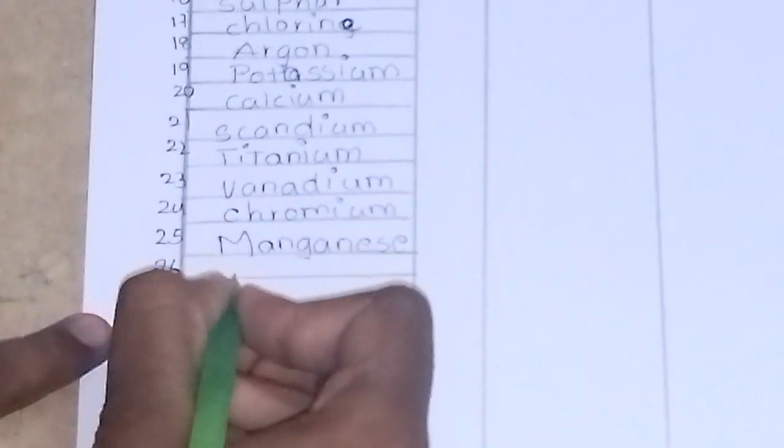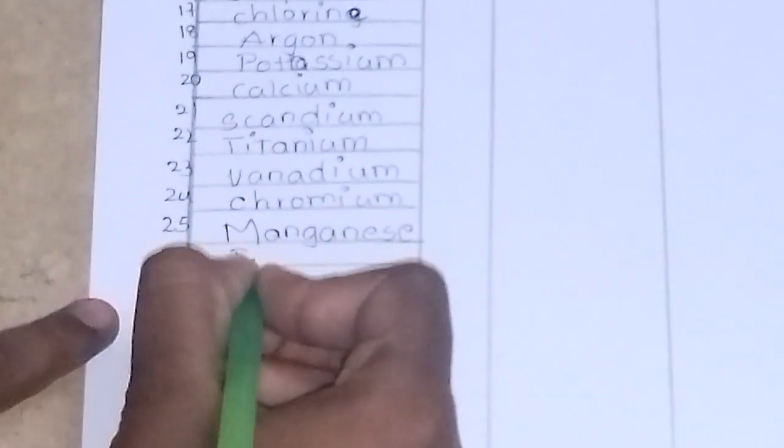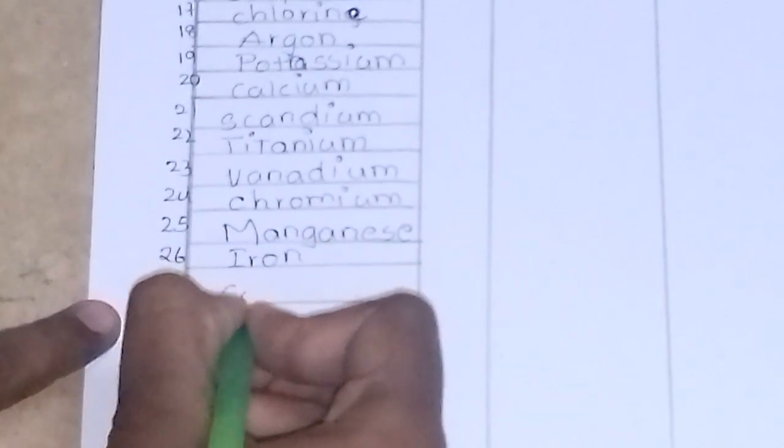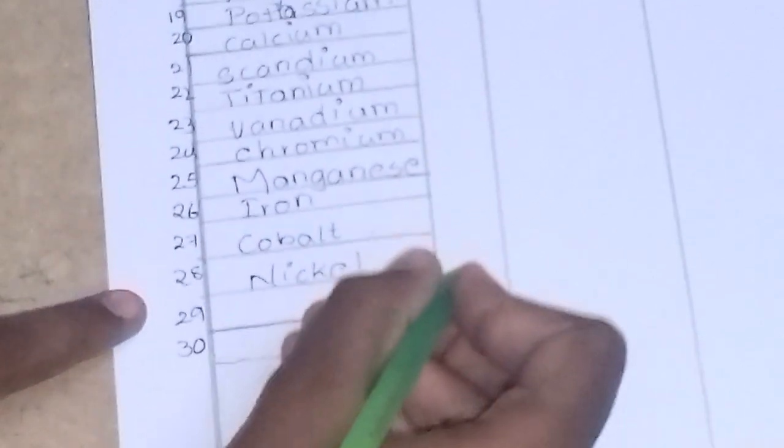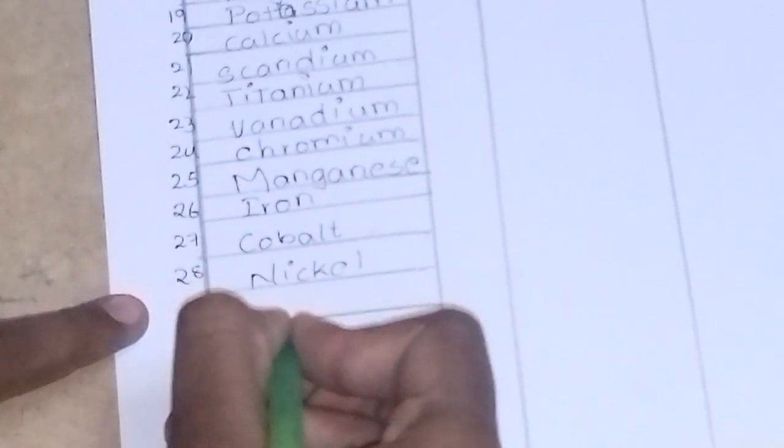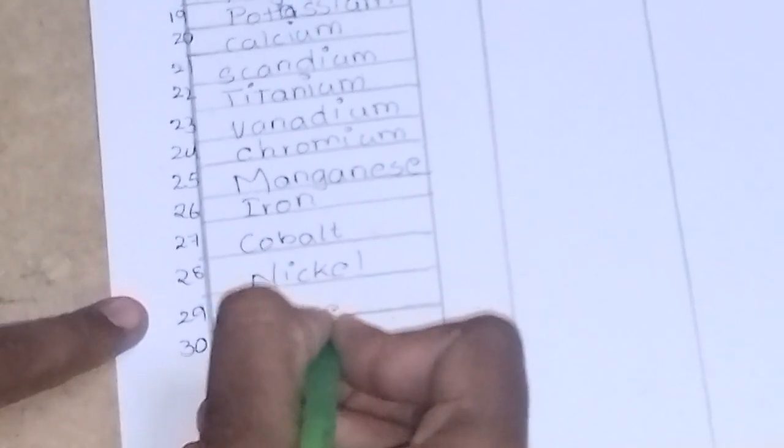The 25th one is manganese. The 26th one is iron, it is known as ferrous. The 27th one is cobalt. The 28th one is nickel. The 29th one is copper, and the last one is zinc.